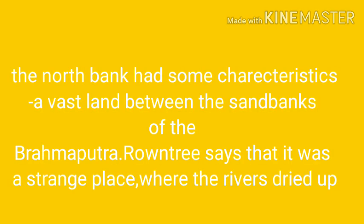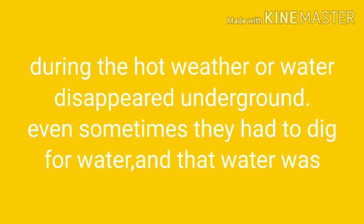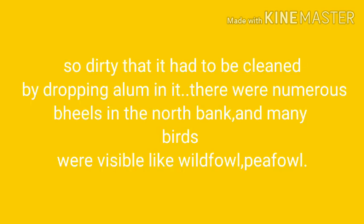Gohati was the headquarter of Kamrup district, which extended to both banks of the river — north and south. The north bank had some distinct characteristics. It was a flat land between the sand banks of the Brahmaputra. Rontree says it was a strange place where rivers dried up during the hot weather, or water disappeared underground. Sometimes they even had to dig for water, and that water was so dirty it had to be cleaned by dropping alum in it — alum being a chemical used to purify water.